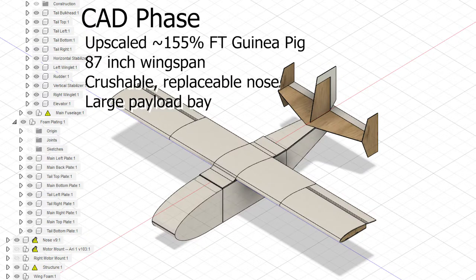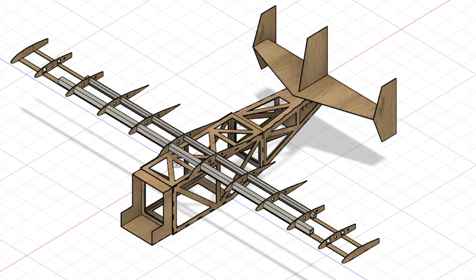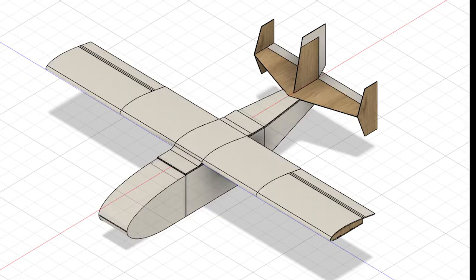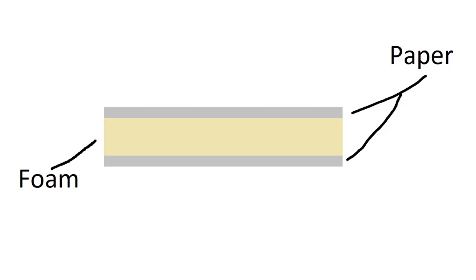The new plane will have the same dimensions as the guinea pig but increased by 55%, bringing the wingspan up to 87 inches. It will share similar features such as the crushable nose that can be replaced and a large payload bay. The core structure essentially consists of a plywood skeleton and aluminum square tubing, then covered in foam board — also known as foam core or poster board — which is basically a foam sandwich with paper as bread.